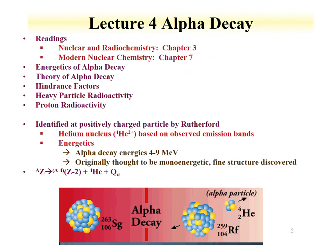This lecture is going to cover energetics of alpha decay — in other words, the energy related to the decays. We're going to get information from the theory of alpha decay as it's developed between energetics and half-lives. We're going to introduce a term called hindrance factors. We're also going to talk about heavy particle radioactivity — in other words, decay of something that's a charged particle larger than a helium nucleus.